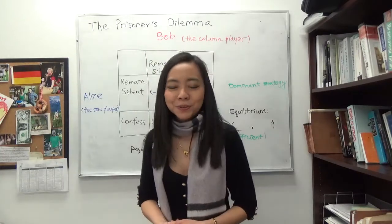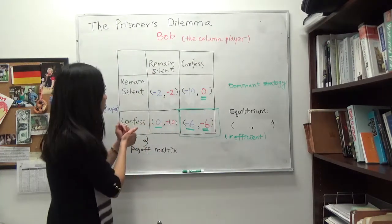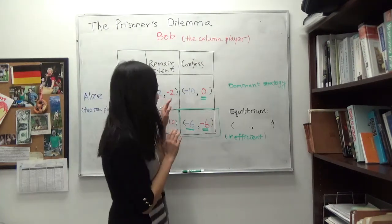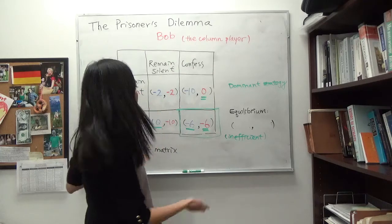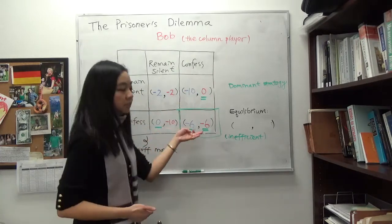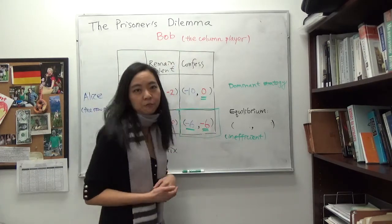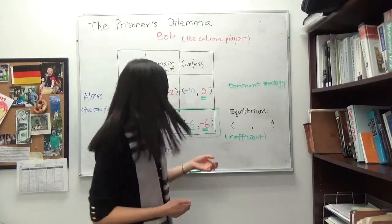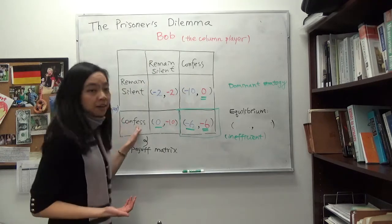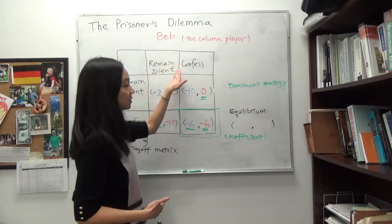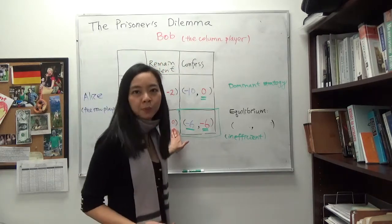So here's the deal the FBI is going to tell Alice and Bob: if you both remain silent, then you both get a sentence of two years — two years for Alice and two years for Bob. And if you both confess, then six years for Alice and six years for Bob. We put negative because if you're behind bars for six years, your utility is negative six. So what happens if Alice confesses and cooperates with the FBI, but Bob remains silent?